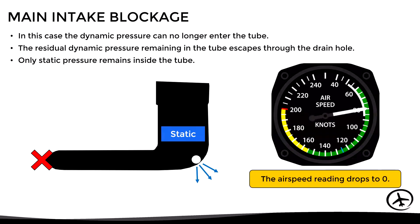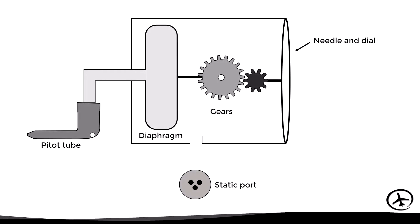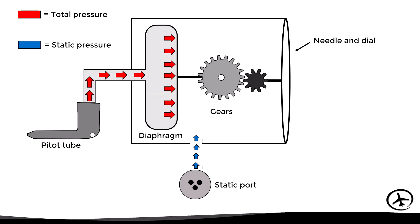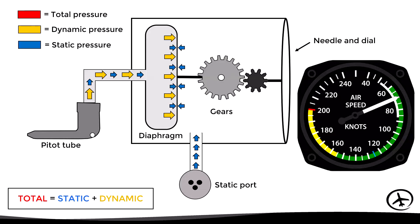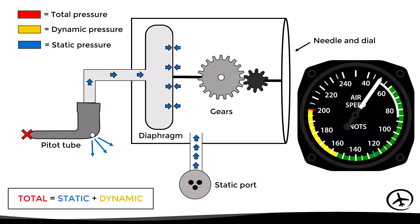This causes the airspeed reading to drop to zero. Under normal operation, the static port provides static pressure to the instrument case and the pitot tube provides total pressure to the diaphragm. Since static pressure is equal inside and outside the diaphragm, expansion or contraction depends only on dynamic pressure. With a main intake blockage, the dynamic pressure escapes through the drain hole leaving only static pressure inside the diaphragm, causing it to contract and the needle to indicate zero.